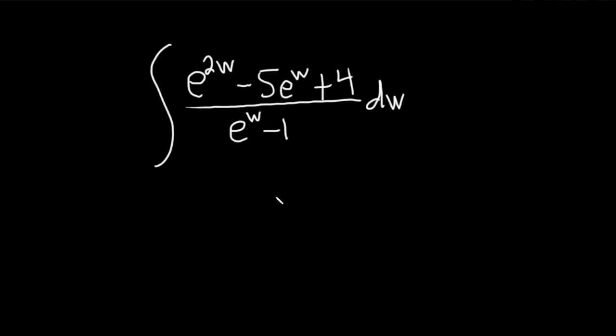Hi, in this problem we're going to try to work out this indefinite integral. So we have e to the 2w minus 5 e to the w plus 4 and that's all being divided by e to the w minus 1 and then we have a dw here.